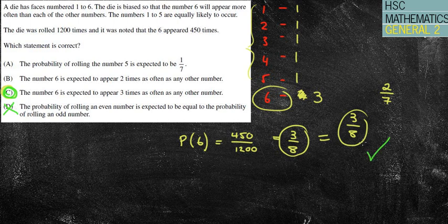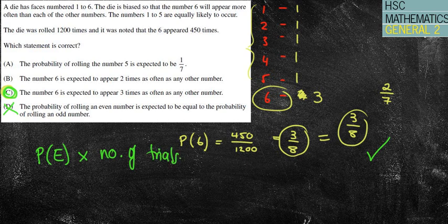That's a much more challenging question — I'd say it's a band five or band six level question — but it gives you an idea of harder questions out there. For the most part, for expected outcomes, we simply take the probability of the event occurring and multiply it by the number of trials. Have an awesome day, folks. Get through the questions and let me know if you have any problems.